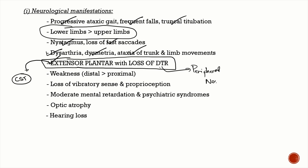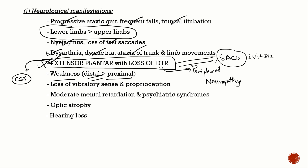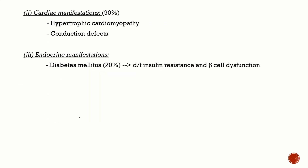The combination of a positive Babinski sign with absent deep tendon reflexes is also seen in subacute combined degeneration of the spinal cord in vitamin B12 deficiency. Additional neurological features include distal muscle weakness, loss of vibratory sense and proprioception due to posterior column involvement, mild to moderate mental retardation, psychiatric issues, optic atrophy, and some degree of hearing loss.